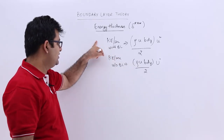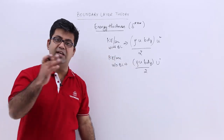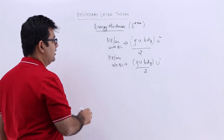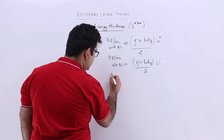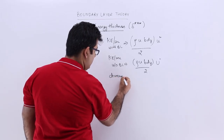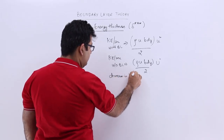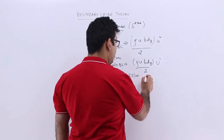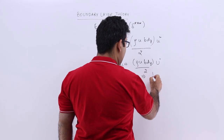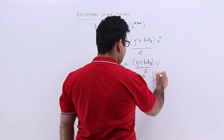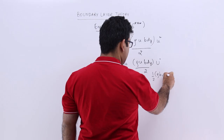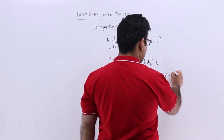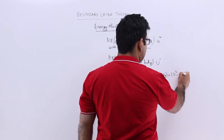There is a decrease in the kinetic energy per second through a section due to the development of a boundary layer. The decrease in kinetic energy per second due to the boundary layer is equal to 1/2 rho b dy into u into (capital U squared minus small u squared).